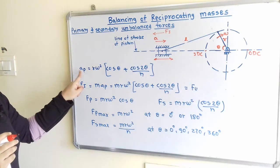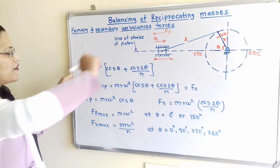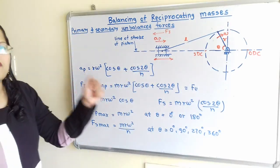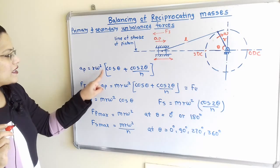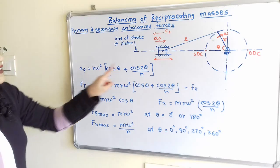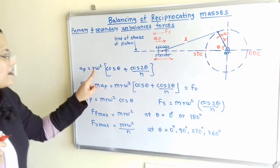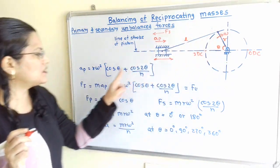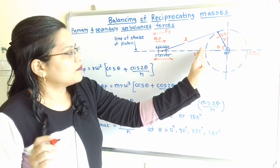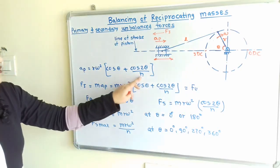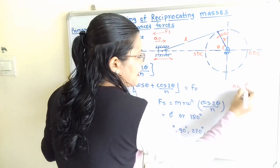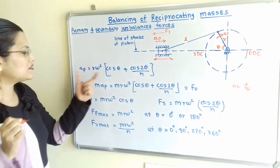The acceleration of the piston, denoted Ap, is given by the formula: Ap = R·ω²·(cos θ + cos 2θ / N), where R is the radius of the crank, ω is the angular velocity, θ is the angle from the inner dead center, and N is the obliquity ratio where N = L/R.